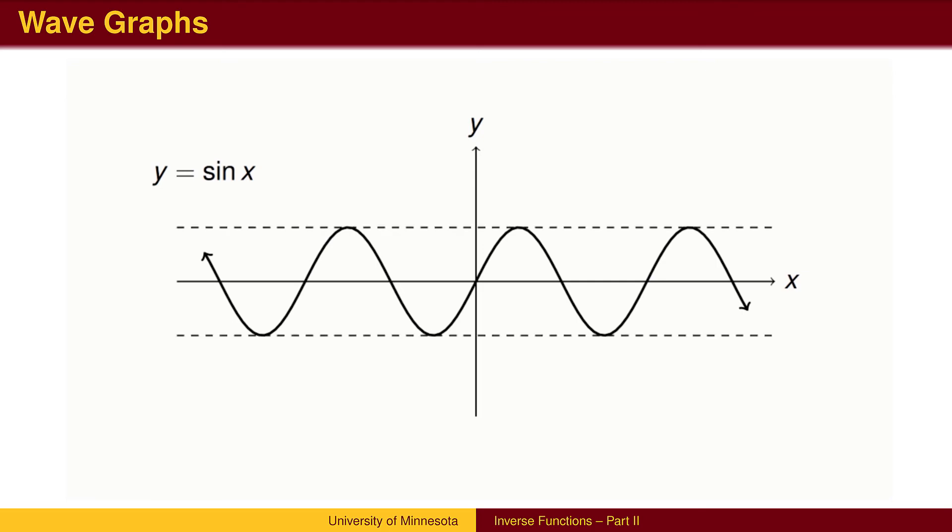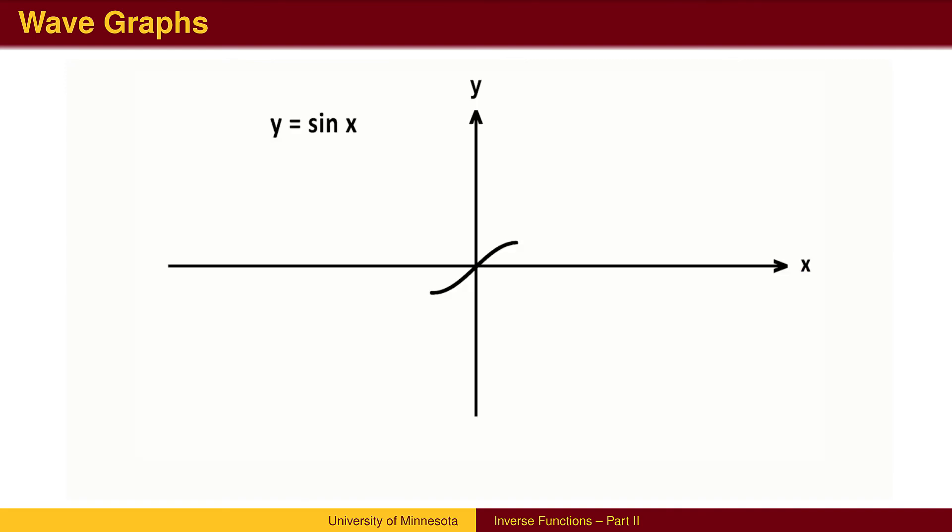Y equals sine of x has its minimum y value at negative one and maximum at one. We restrict the domain to a portion of the graph that is one-to-one. If we interchange x and y on this portion of the graph, we get an inverse function for y equals sine of x.